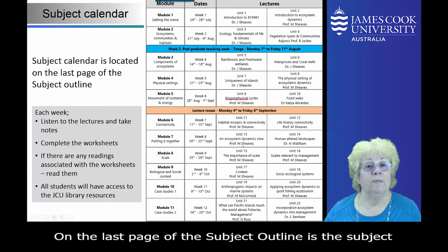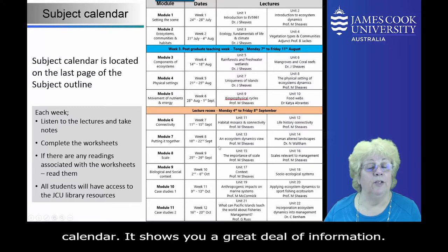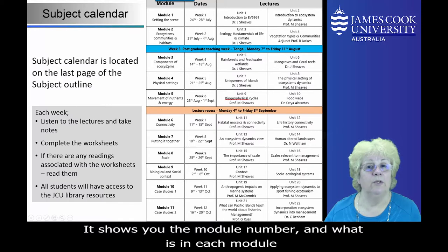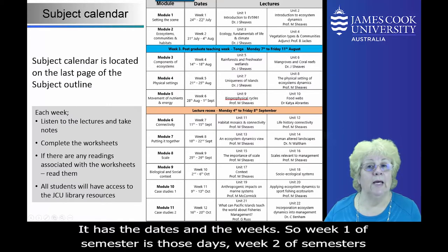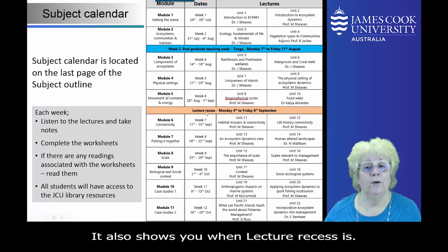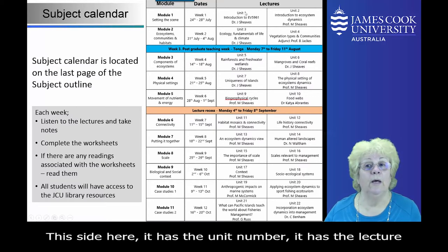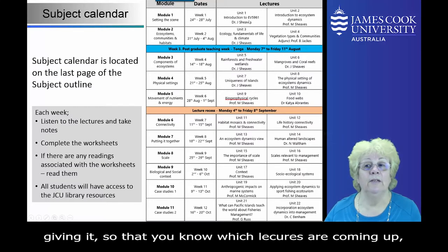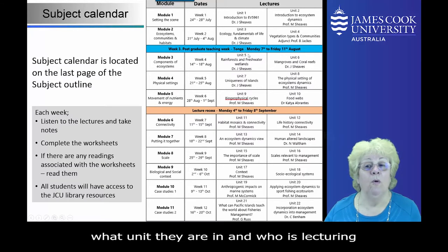On the last page of the subject outline is the subject calendar. It shows you the module number and what is in each module, the dates and the weeks — so week one of semester is those days, week two and so forth. It also has when the postgraduate teaching week in Tonga is and where lecture recess is. This side shows the unit number, the lecture title, and who's giving it, so that you know which lectures are coming up, what unit they're in, and who's lecturing them.